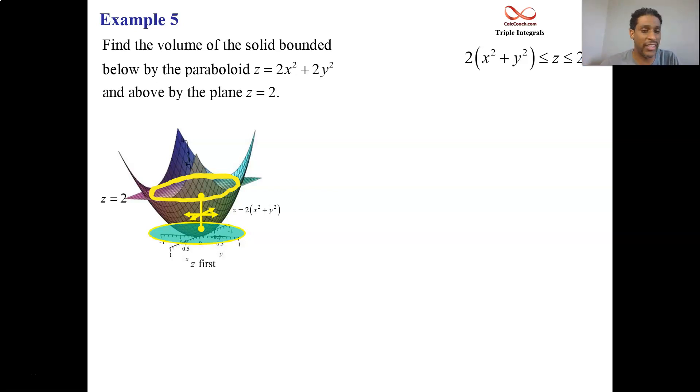We should be definitely using cylindrical. Therefore, x² + y² is r². So z is going to live between 2r² and 2, two r² being the lower z, two being the upper z.